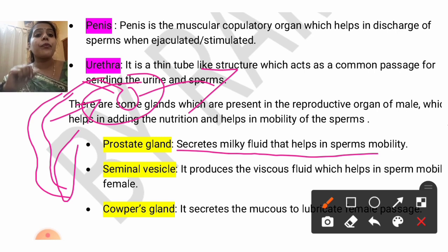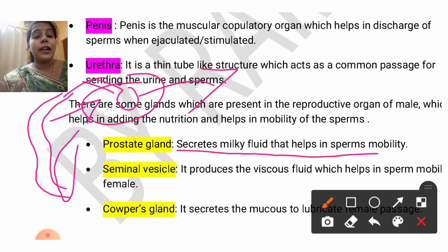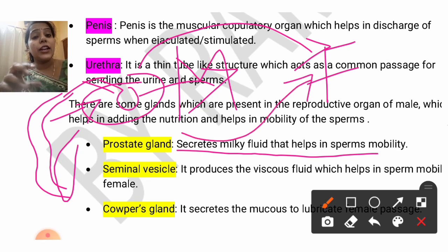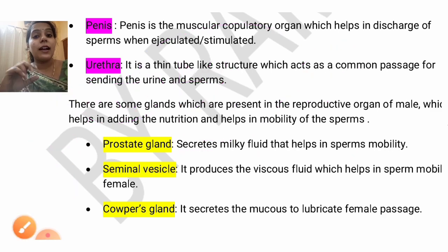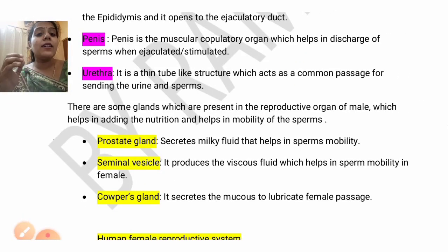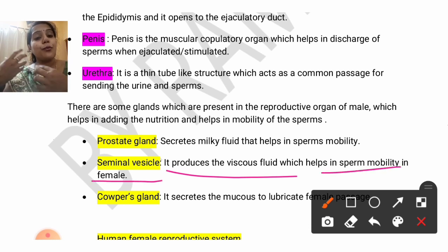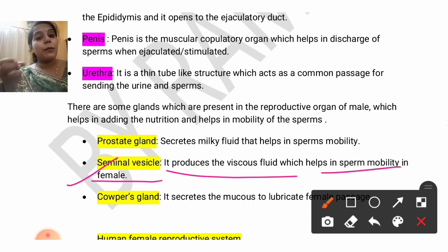The function of the seminal vesicle: it also produces a viscous fluid that helps in the mobility of the sperm. Apart from that, it helps to keep the sperms alive. When the sperms enter from the male body into the female body, there is a gap — the sperm has to be alive during this time. That medium will be created by the seminal vesicle.